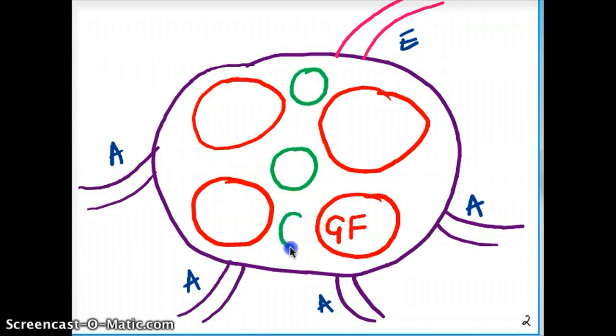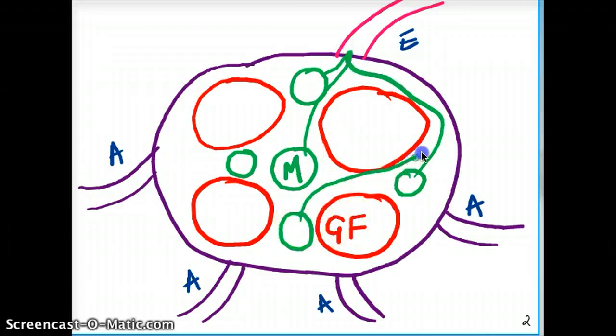And this is called the medullary sinuses, or you can call them the medulla of a lymph node. And in this medullary sinuses, or the medulla, you are going to find macrophages. These medullary sinuses communicate with our efferent. So anything that comes into the lymph node has to pass through this medullary sinuses to make its way out into the efferent.